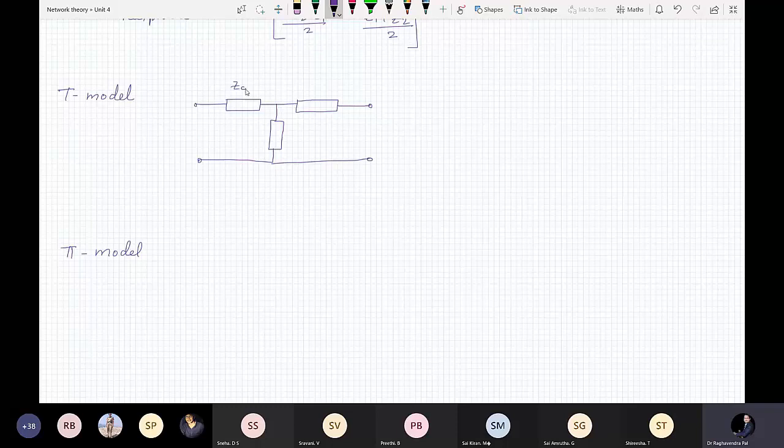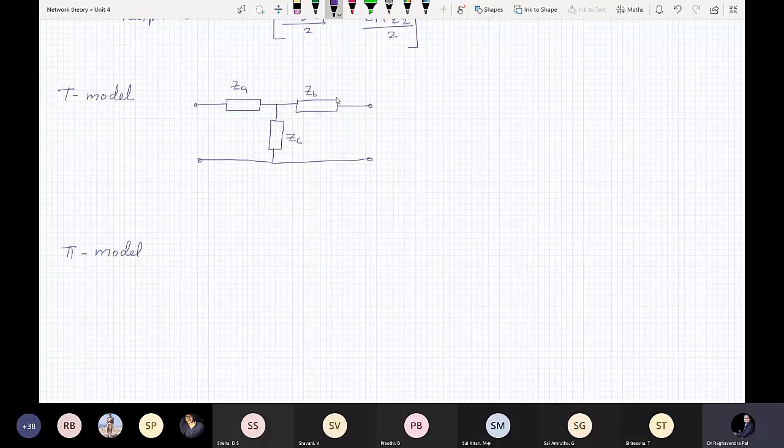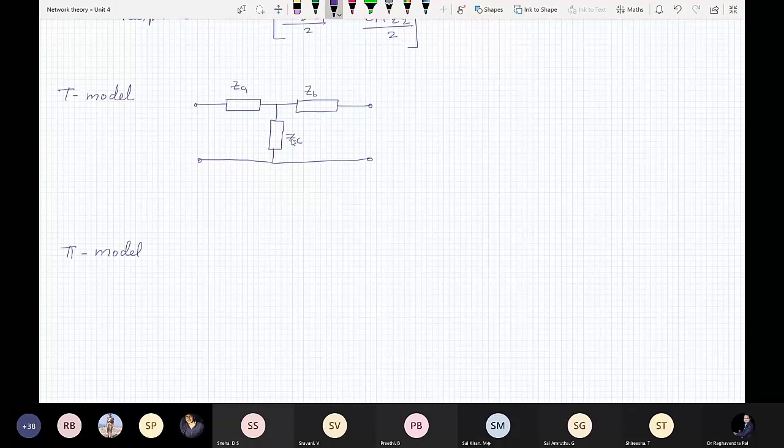So, this is your ZA, this is ZB, this is ZC, correct. So ZA, ZB, ZC is given.